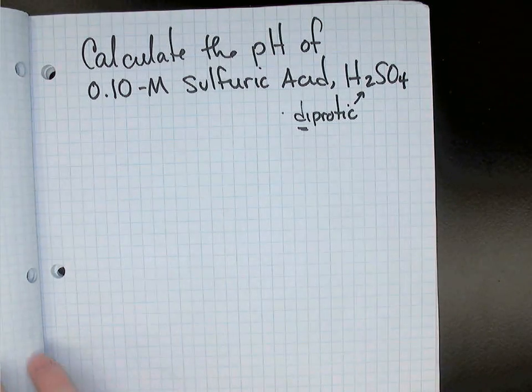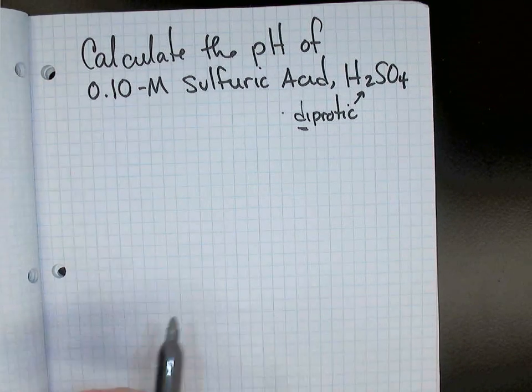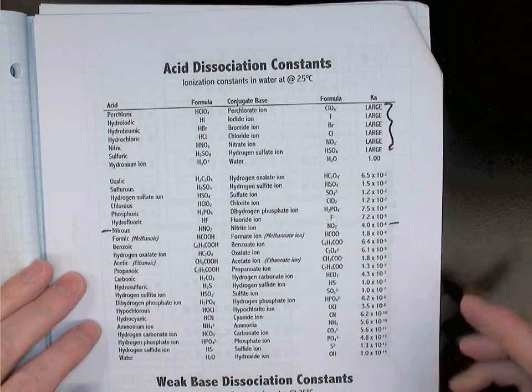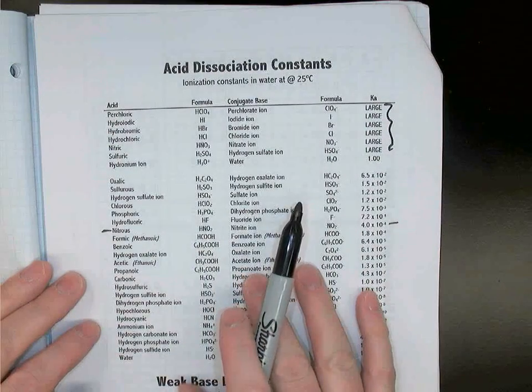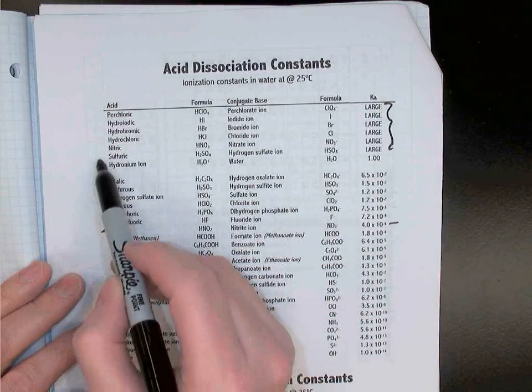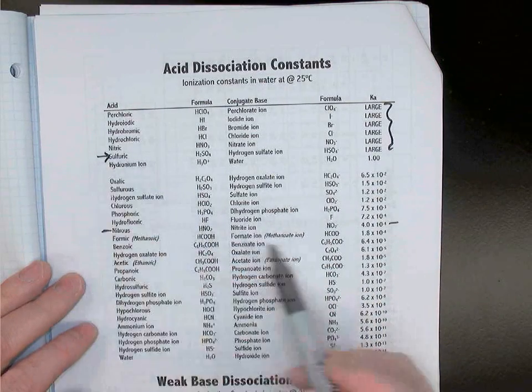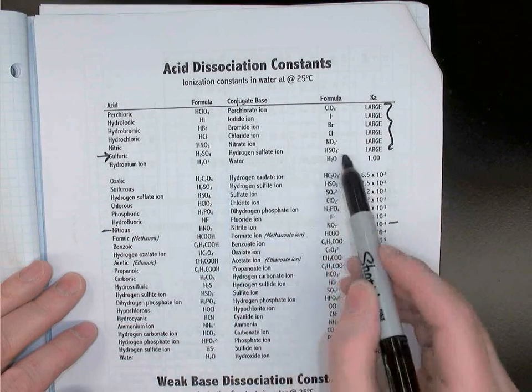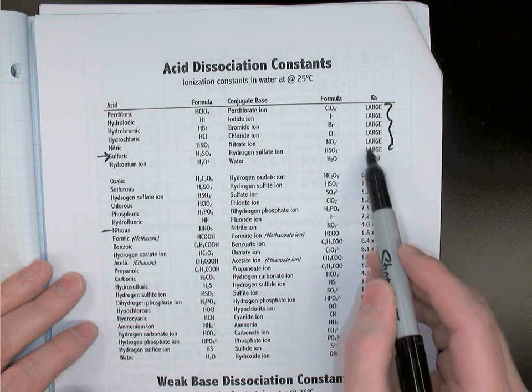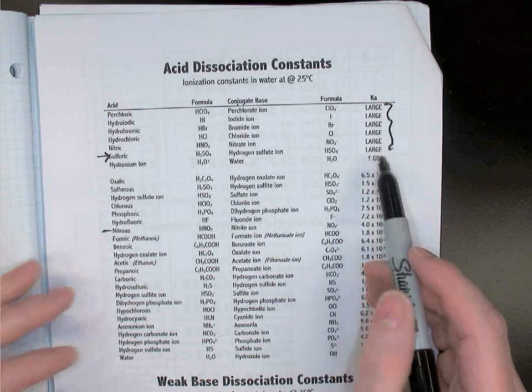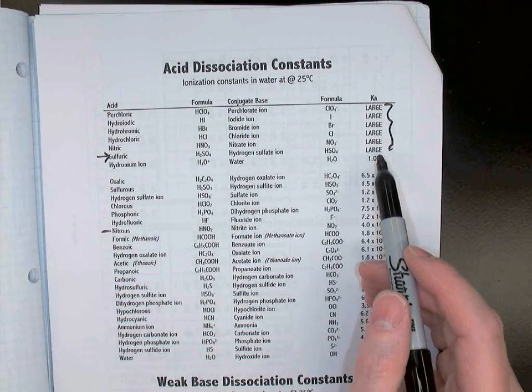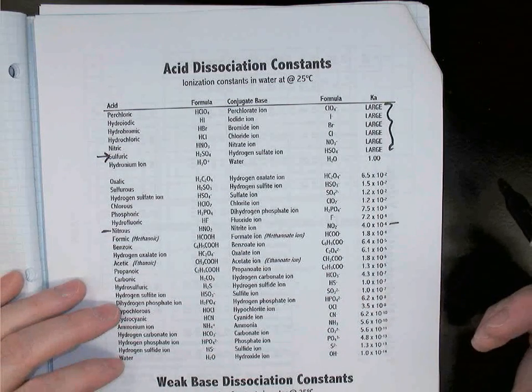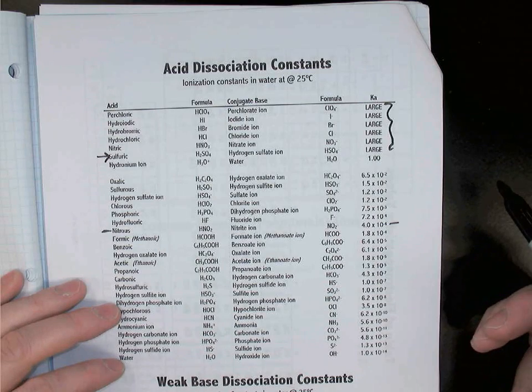Before we start, we'll grab a Ka chart and take a look at the two Ka values for sulfuric acid. I've got a Ka chart here that we use in our data booklets. The first Ka value is here for sulfuric acid, H2SO4, and we see that the Ka value is said to be large. That means that the first step in our dissociation is going to be a strong one. It's going to be 100% ionized because of that large Ka value.